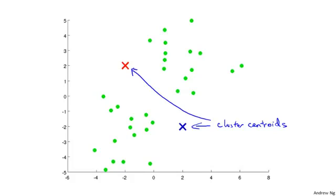K-means is an iterative algorithm and it does two things. First is a cluster assignment step, and second is a move centroid step.